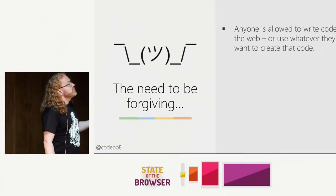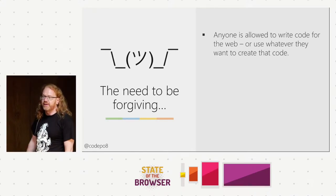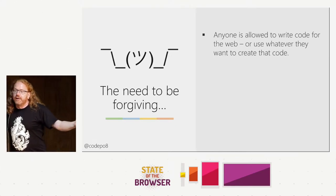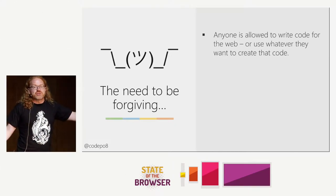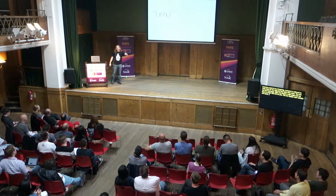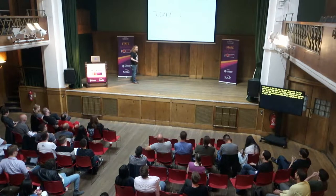Browsers also need to be forgiving. Anyone is allowed to write code for the web using whatever they want — yes, you can use FrontPage 1997 to still make a website and we have to render that for you. The Space Jam website still exists with an accessibility link saying 'please tell us when something's wrong because we don't know how to make it accessible.' Whatever goes wrong, it's the browser's fault. That's always the thing — we love to point at the browser.